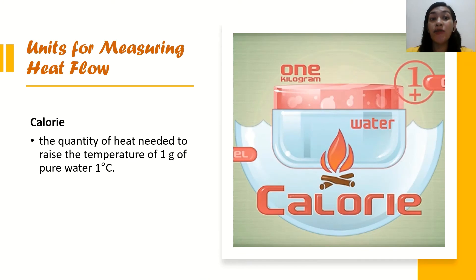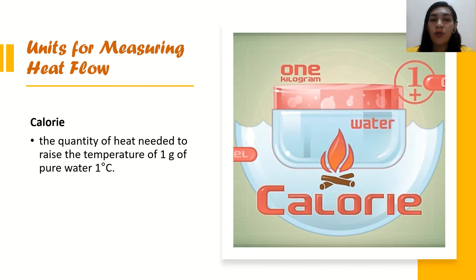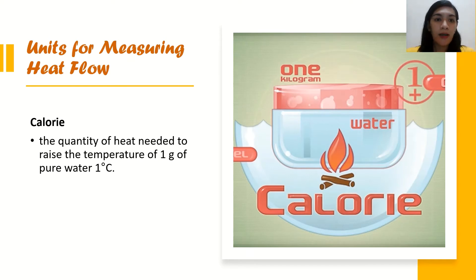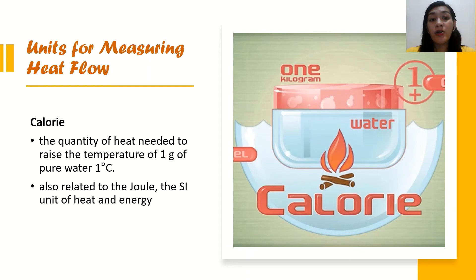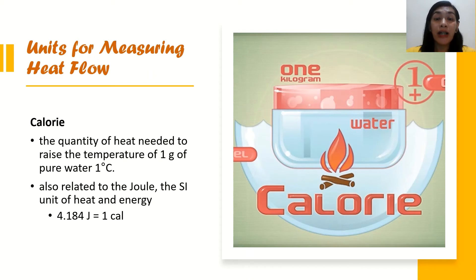How do we measure heat flow? We measure heat flow using the unit calorie. A calorie is the quantity of heat needed to raise the temperature of 1 gram of pure water by 1 degree Celsius. This should not be confused with the calorie used in food — that is a different concept. The calorie is also related to joules as a unit of heat and energy: one calorie is equivalent to 4.184 joules.